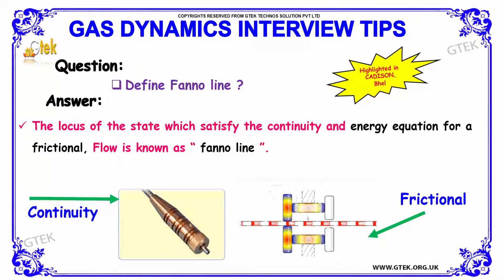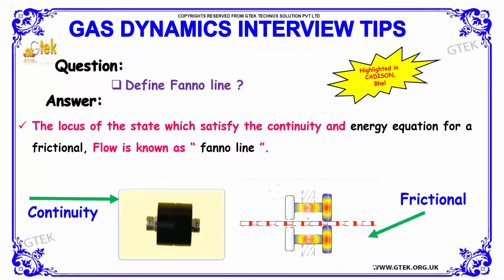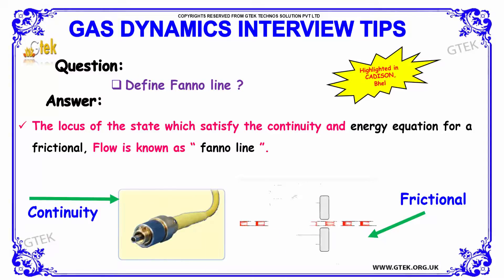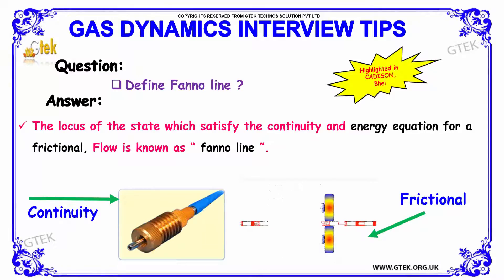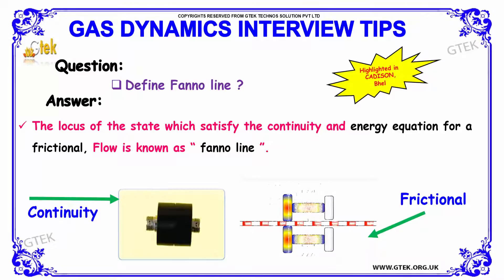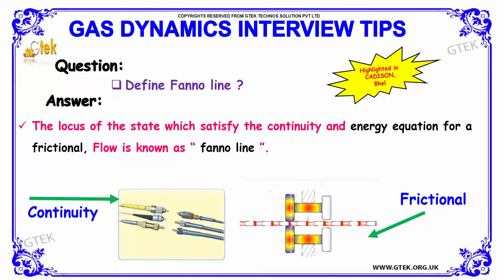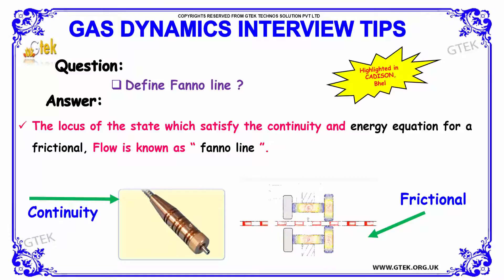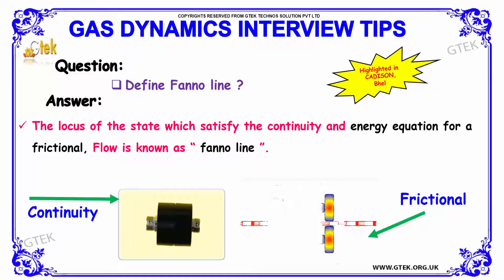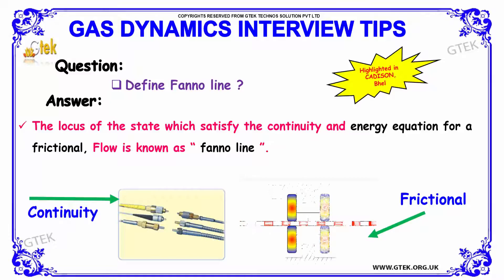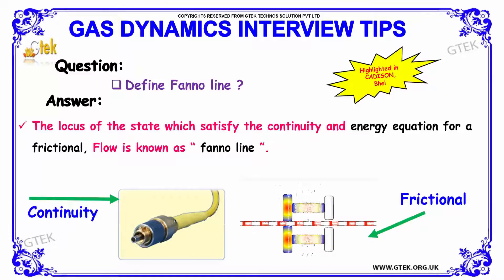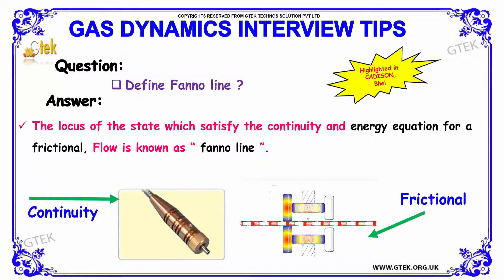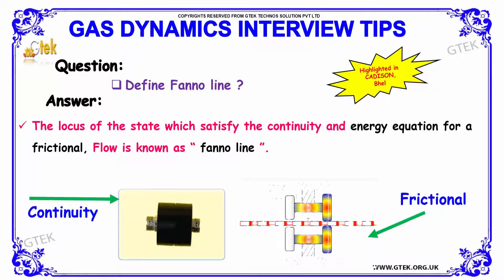Next question: define Fanno line. Fanno line is a steady one-dimensional flow in a constant area. The locus of the states satisfying the continuity and energy equations for a frictional flow is said to be called as Fanno line.